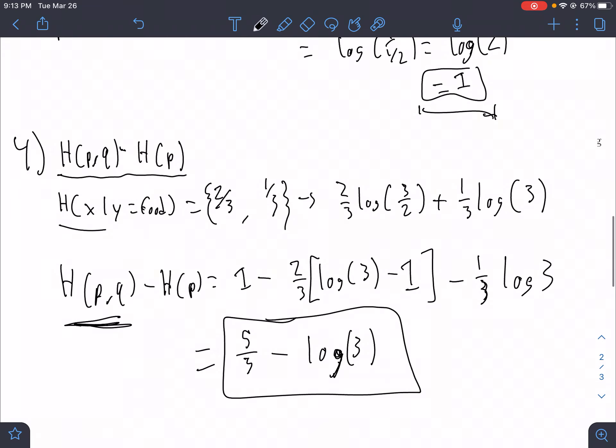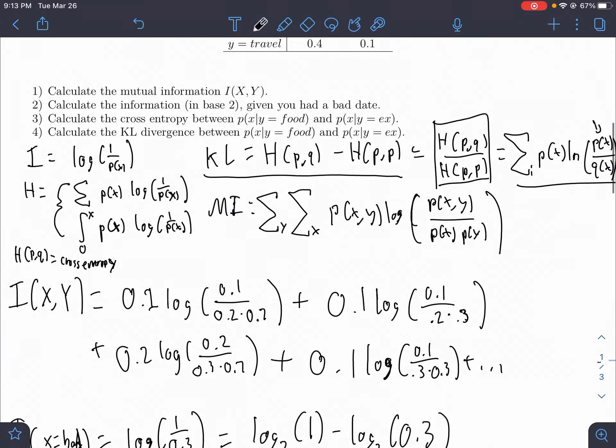Difference between two distributions and mutual information is the KL divergence, but of a specific thing, which is P of X, Y and P X, P Y.